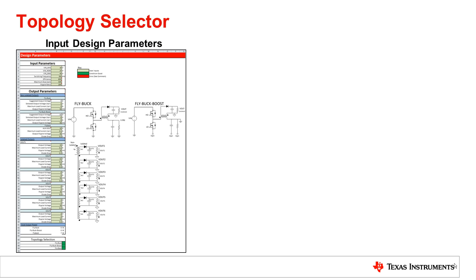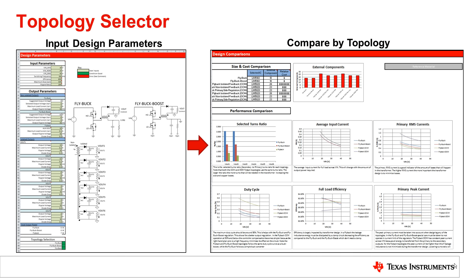The topology selector is a tool that can help you determine whether a fly-buck or a flyback solution is appropriate for your design. Simply input the design parameters in the cells marked green, and it will come out with some calculations on whether the fly-buck is appropriate for a design, as well as some of the performance comparisons between the fly-buck and flyback topologies.